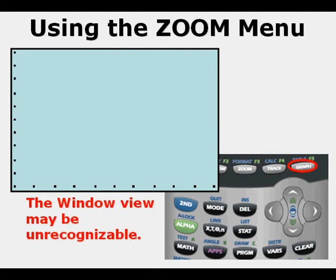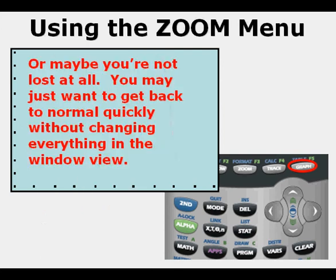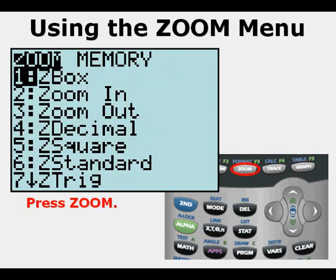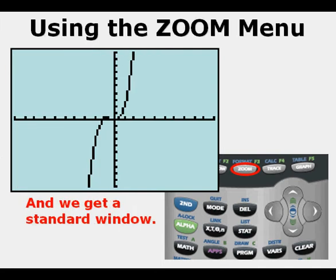But what if we press Graph and see something unrecognizable — a view screen where we don't know where we are? We might feel lost. Or maybe you just want to get back to a normal window quickly without changing everything in the window view. All we have to do is press Zoom, then scroll down to 6 — Zoom Standard — or just press 6, and we get a standard window.